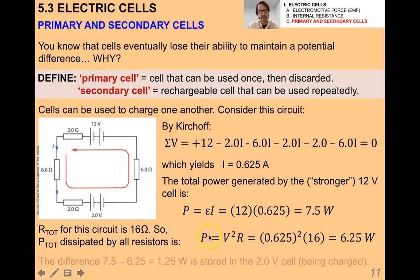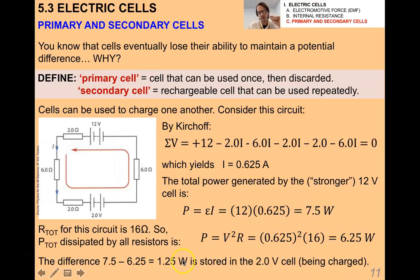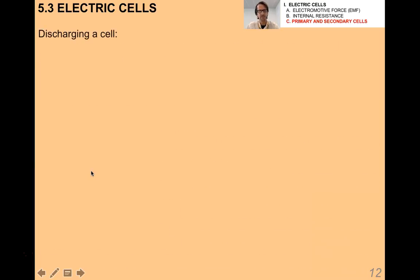There's a difference of 1.25 watts, and that power is the amount of energy per unit time stored in the 2-volt cell, which is being charged. This is a quantitative treatment of how one cell can charge another rechargeable cell.